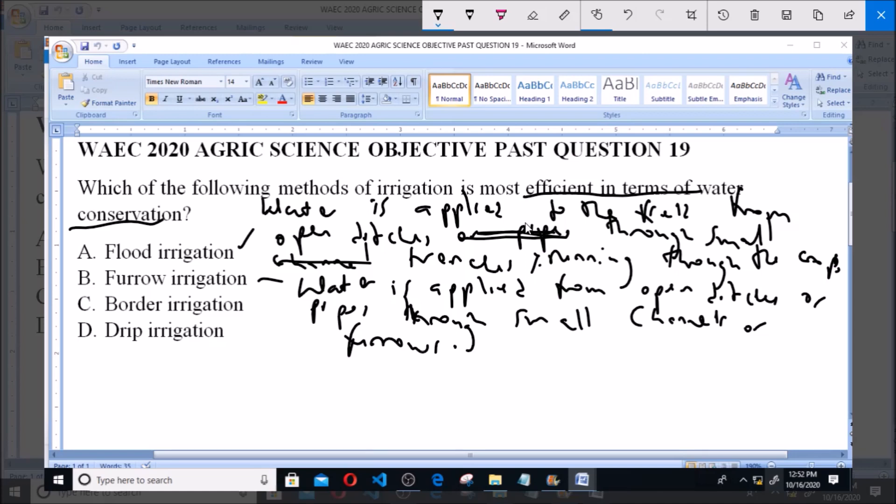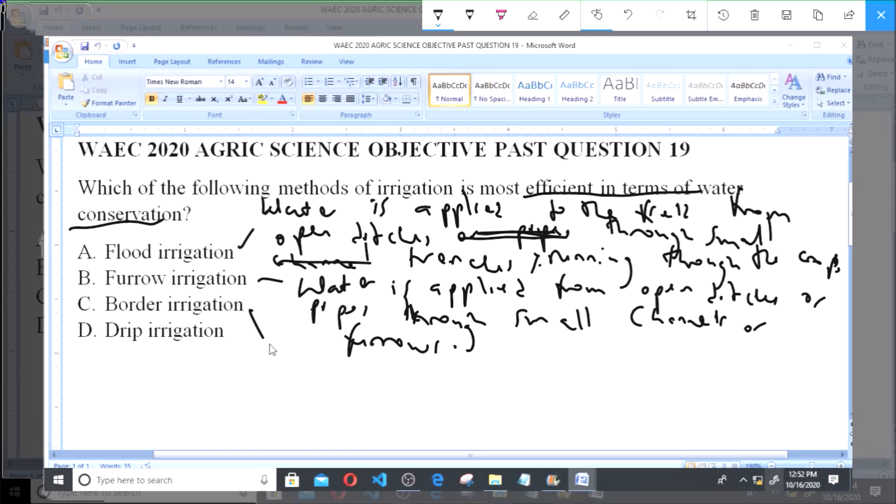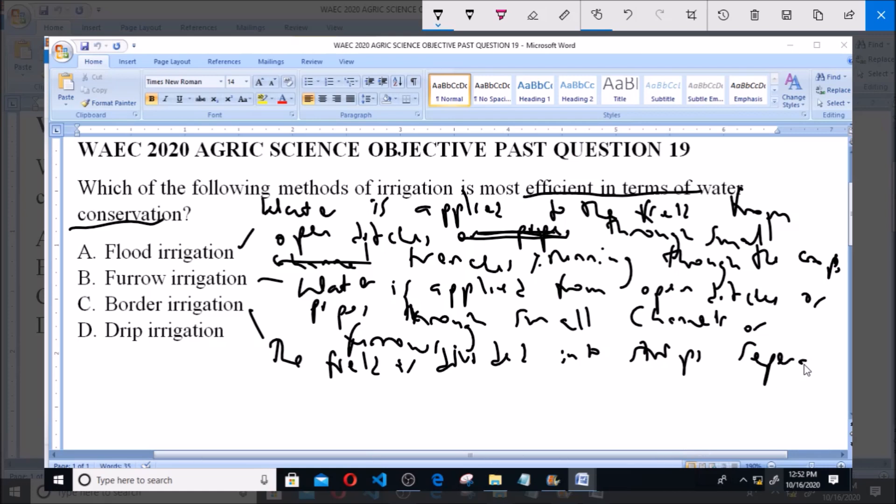Now option C says Border Irrigation. In border irrigation the field is divided into strips separated by border ridges running down the gradient of the field, and then these areas are flooded during irrigation.